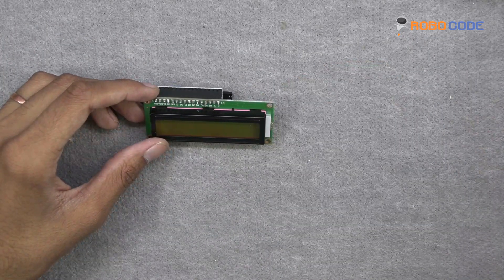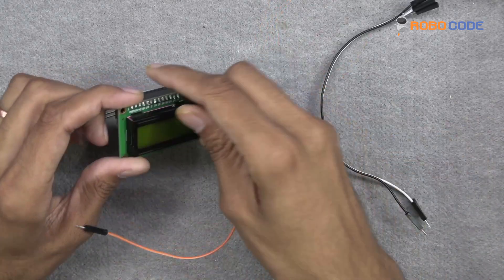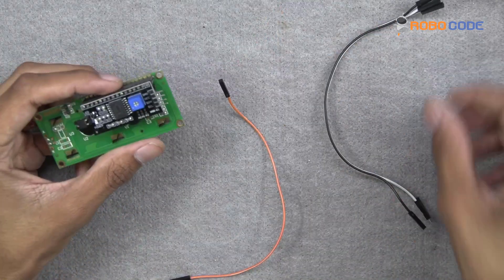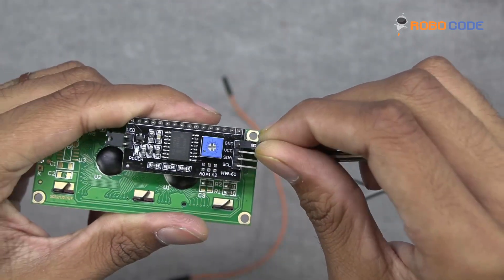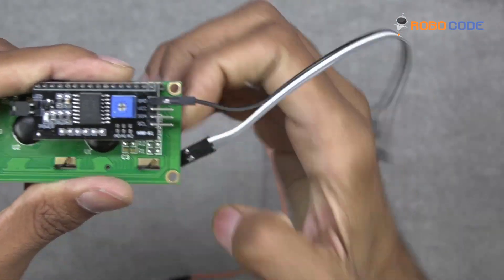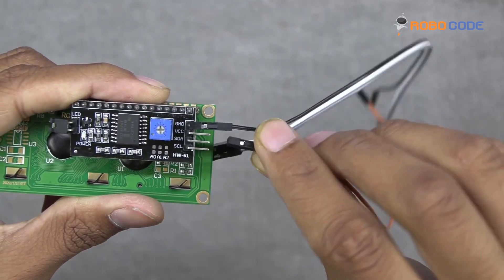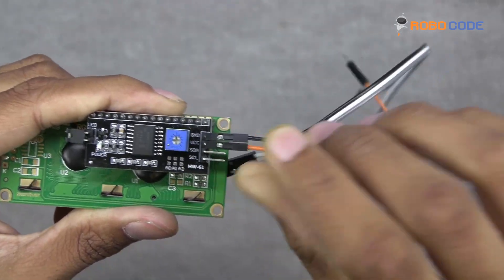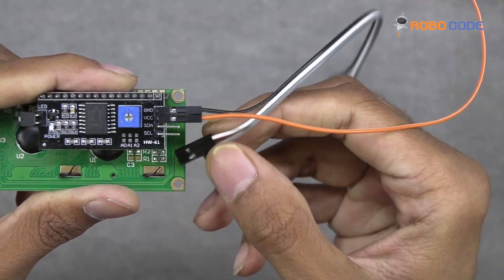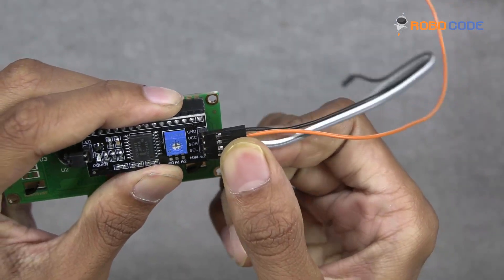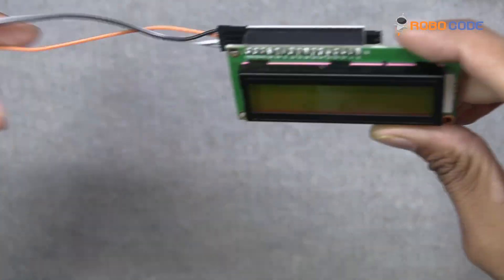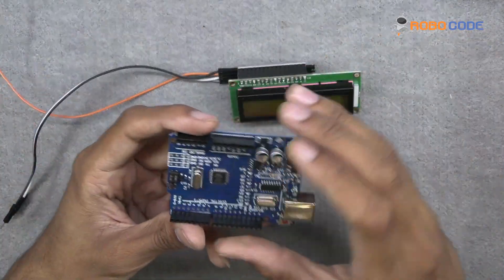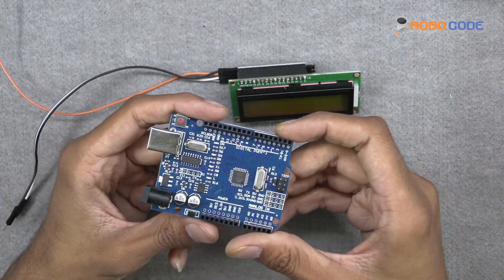Once that is done, we will take four jumper wires, male to female, and we will connect to the I2C display module. We will take the black wire and connect to the ground, the orange wire to the VCC, and then white and grey wires respectively to SDA and SCL.